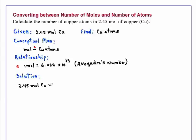We'll multiply that by the single conversion factor. Remember that we have 6.022 times 10 to the 23rd copper atoms